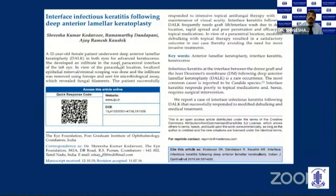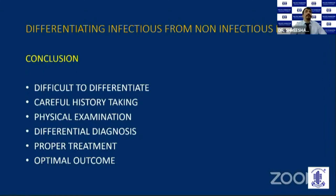To conclude, it is very difficult to differentiate infective and sterile keratitis of the cornea. It is not an easy task even for the best clinicians or surgeons. However, with careful history taking, physical examination, a proper differential diagnosis, and appropriate treatment, patients can have the best chance of the best possible outcome. Thank you very much.